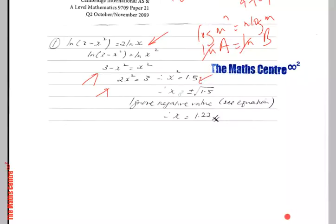So, x will be this: x² = 1.5, so x will be plus or minus the square root of 1.5.